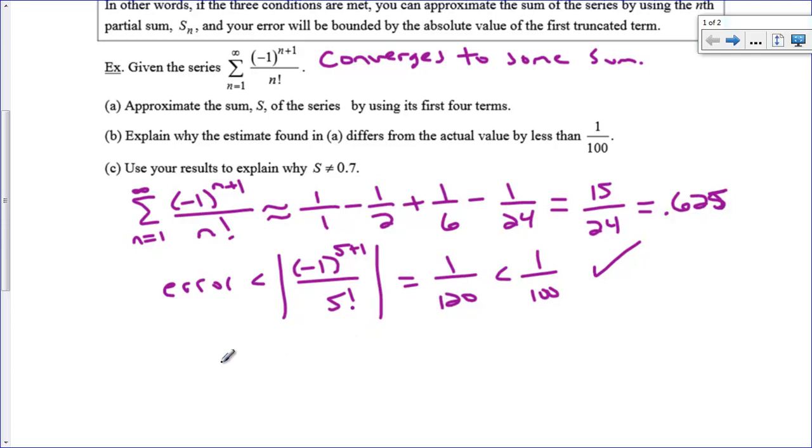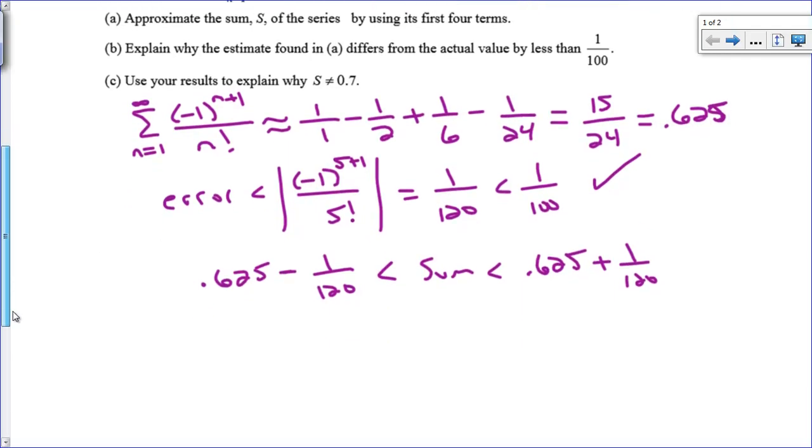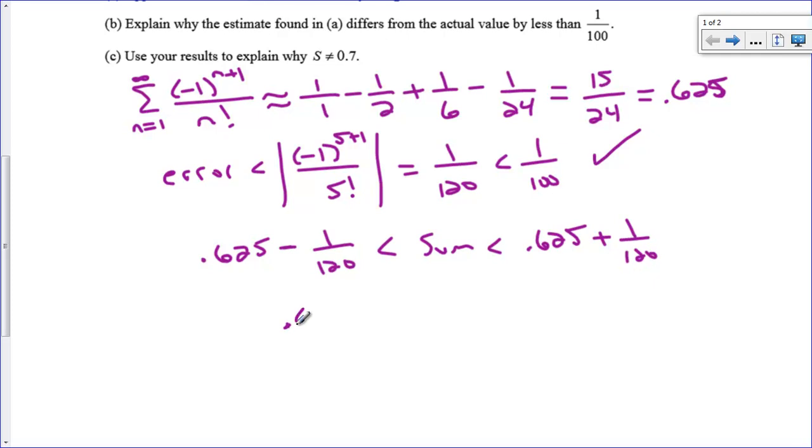So what we can say is that .625 minus our error and .625 plus our error, it's like a plus or minus statement, is going to bound the actual sum. It's either larger than .625 by one over one hundred and twenty-th or it's less than .625 by one over one hundred and twenty-th. Somewhere in here is where our sum must lie. And I did this on the calculator and I get .616 repeating is the smallest it could be. And .63 repeating is the largest it can be. So we know that our sum is actually in between those two values.